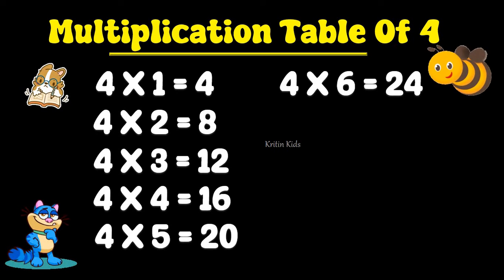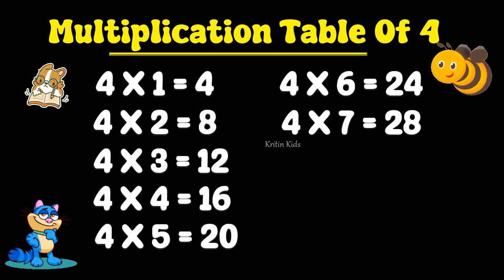Multiplication Table of 4. 4 4s are 16, 4 5s are 20, 4 6s are 24, 4 7s are 28.